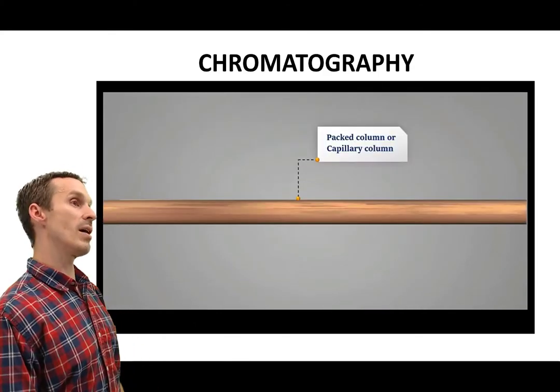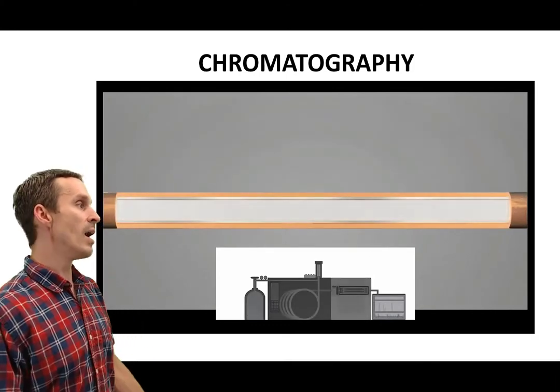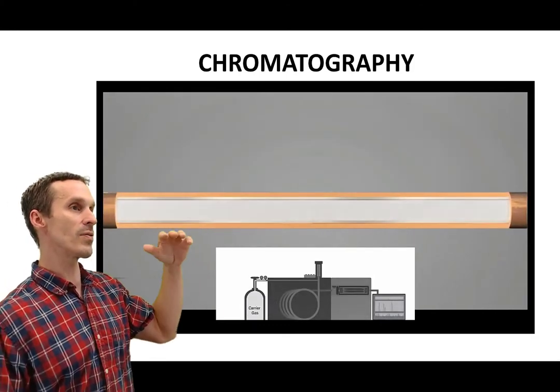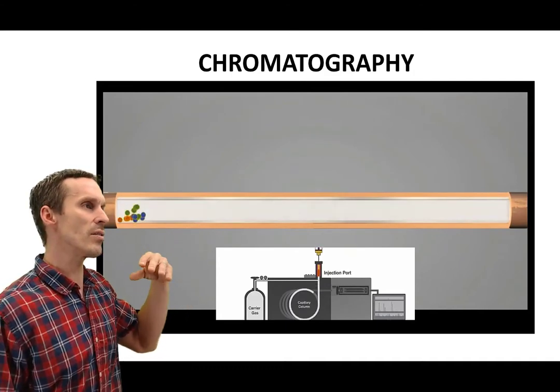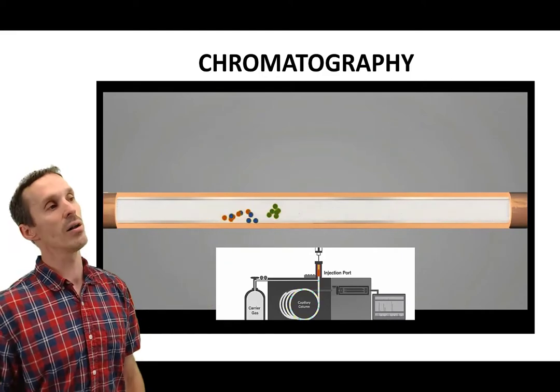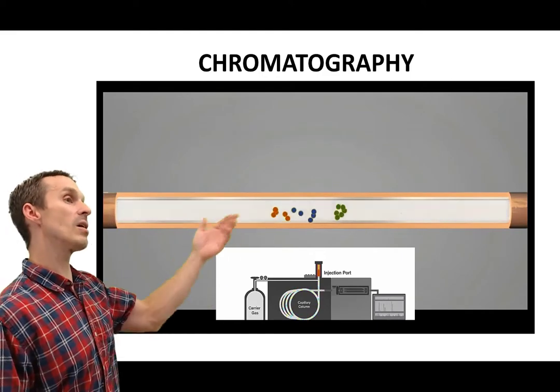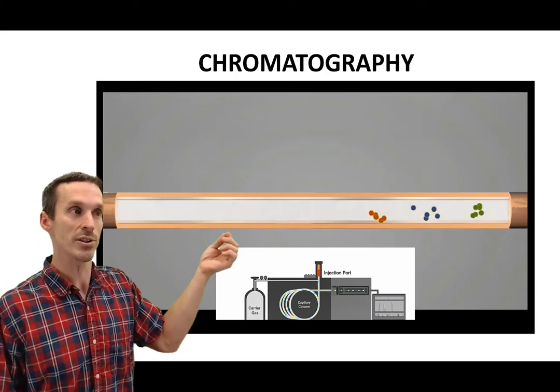Now the sample is going to travel down this really long column. The column might be like a hundred meters long, and the inside of it has a coating that allows for different retention. Some analytes stick to that surface and others not so much. As the analytes are blown through that column, you notice that some of them have a head start, some of them are gaining on the others. They sort of cluster up like that and you end up with a separation.